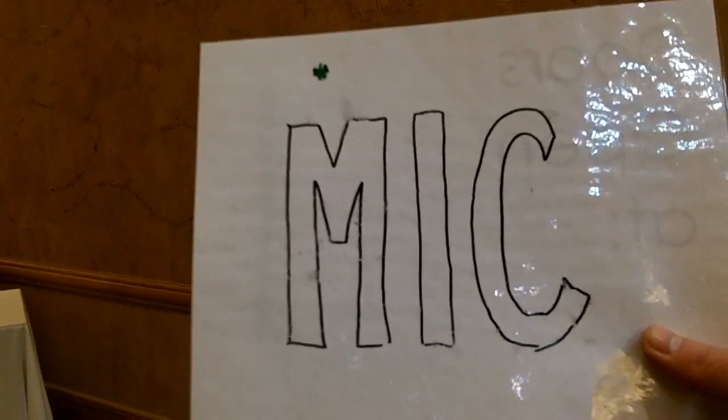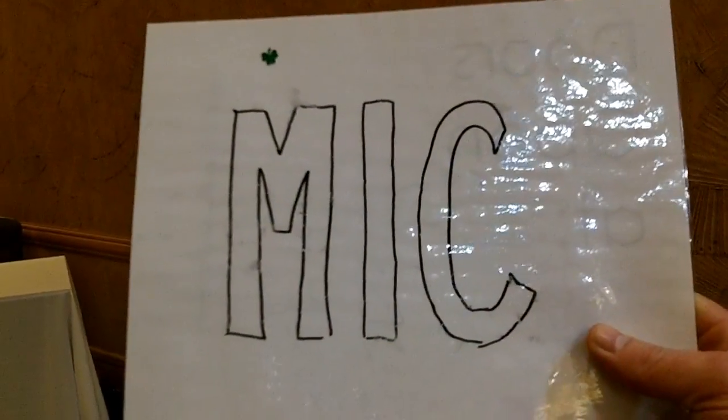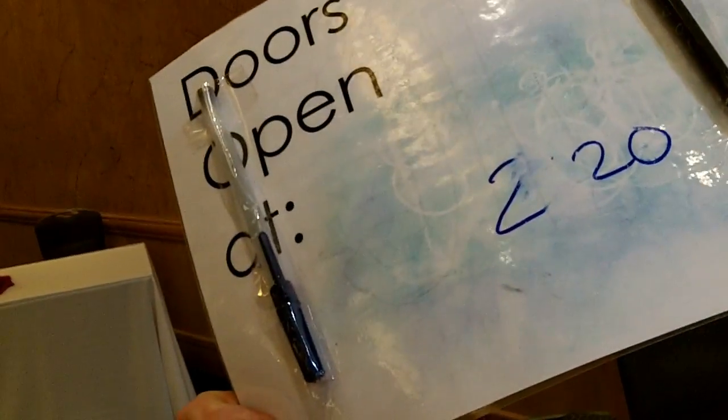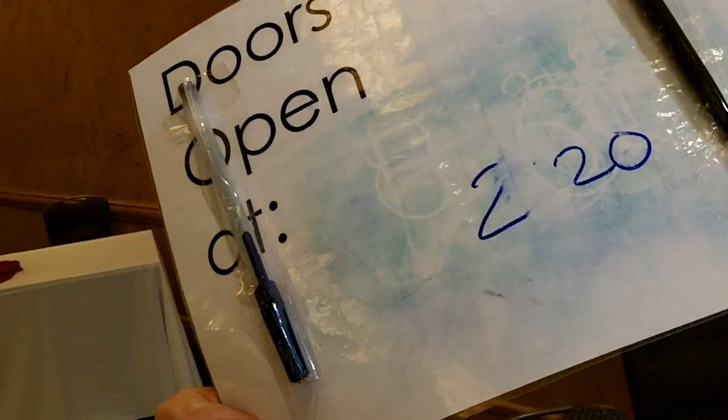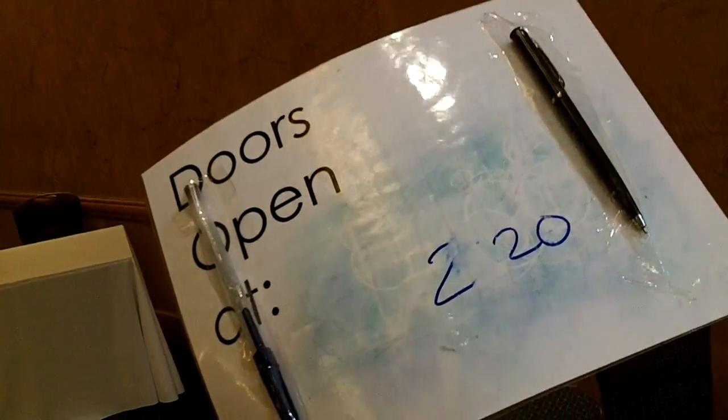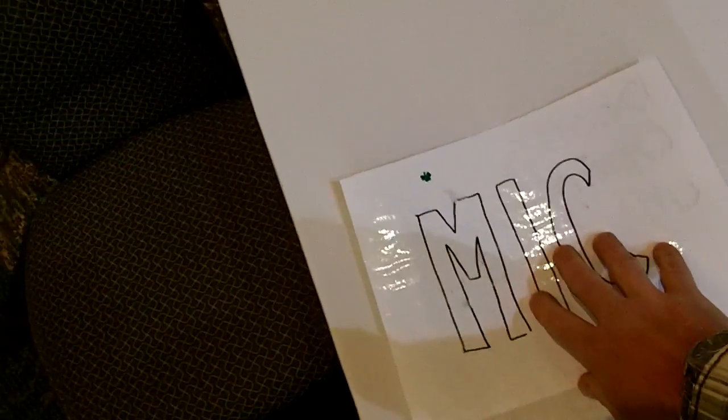So all we've done is we've taken a laminated piece of paper, wrote the word 'mic' on it so everyone knows what needs to be sitting there. And on the back of it we've used an old thing that we used to let people know when the doors are open. You just take two pens or two markers on the back of it, and it creates basically a cradle where the microphone is going to sit.